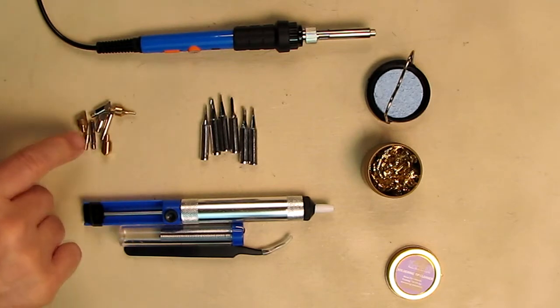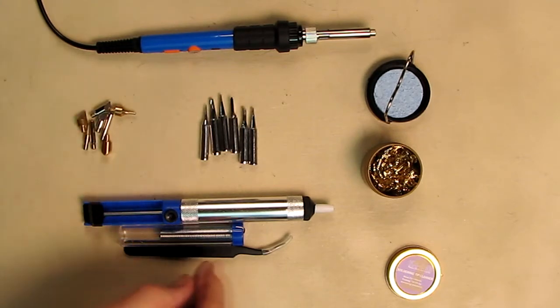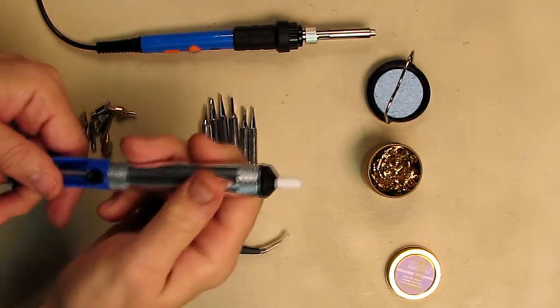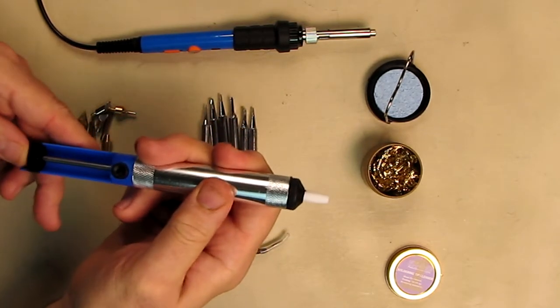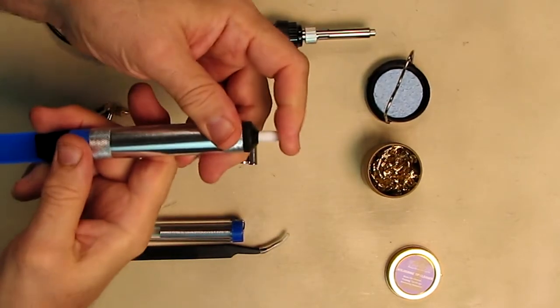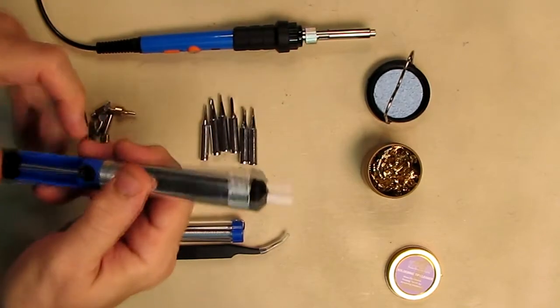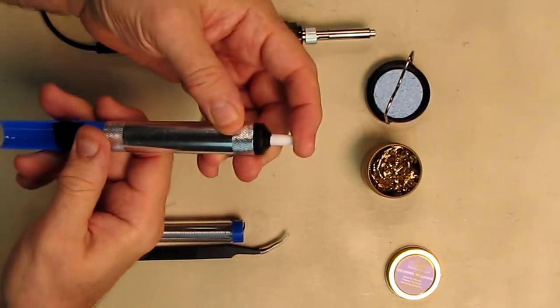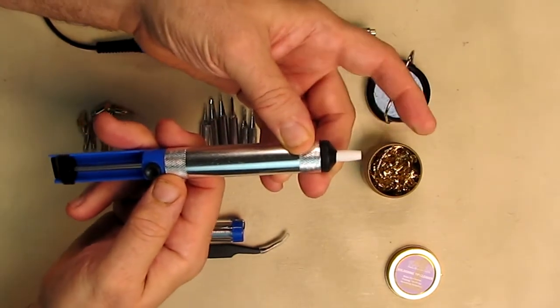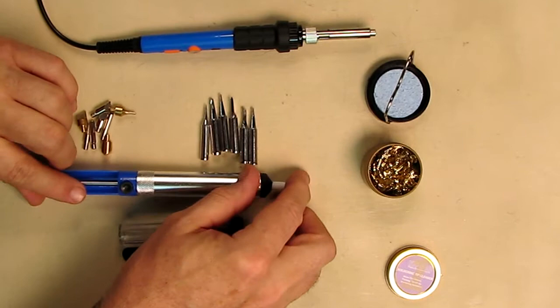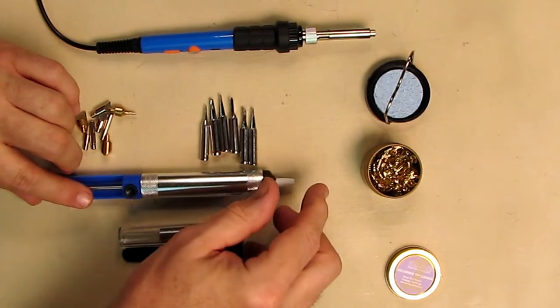This is the all aluminum vacuum system, and these things are so handy. You just push in like that and it causes a vacuum. If I block that, you can see what happens—it's basically sucking on my finger. When I release it, this is going to take all that heated old solder on some of your connections.